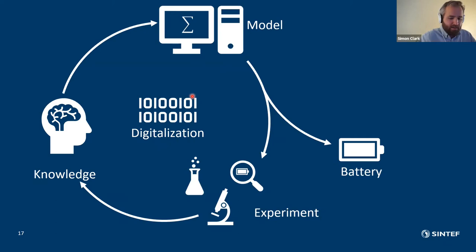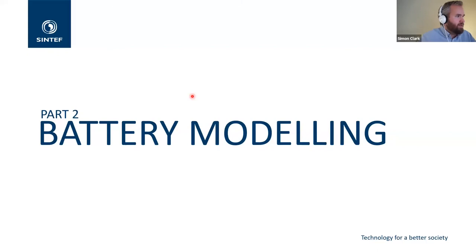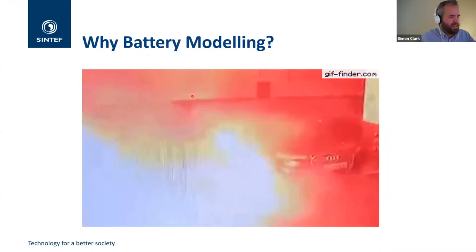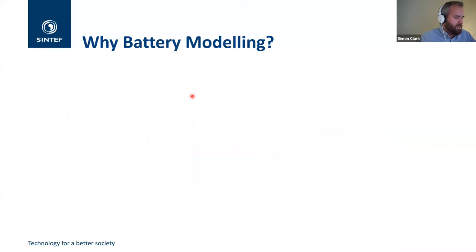So part two battery modeling. When we think about batteries and why we might need models, oftentimes this is the image that comes to mind, right? This comes up in the news every now and then about batteries catching fire either in cars or in airplanes or in ships and safety is a big concern. So when we design models for battery design optimization, designing for safety is one of the top use cases for these systems.